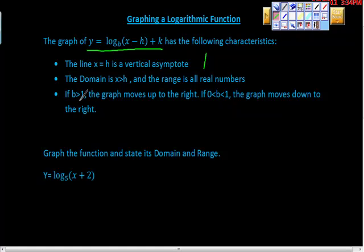Here's some detail that can really help you. If b, this value right here, if b is greater than 1, the graph moves up to the right. So if b is greater than 1, our graph has this general shape. It moves up and increases as it goes to the right, something like that.